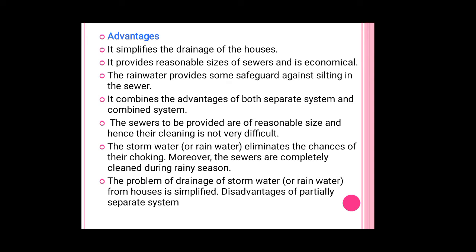The advantages of partially separate systems compared to the combined and separate systems are: it simplifies the drainage of houses; it provides reasonable sizes of sewers and is economical; the rainwater provides some safeguard against silting in the sewer; it combines the advantages of both the separate system and the combined system; the sewers provided are of reasonable size and hence their cleaning is not very difficult; and the stormwater eliminates the chance of choking. Moreover, the sewers are completely cleaned during rainy seasons.